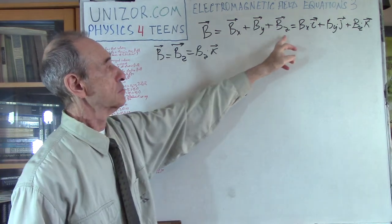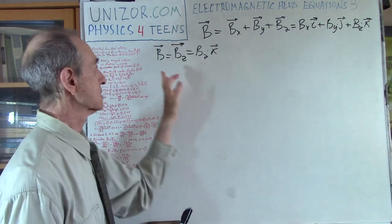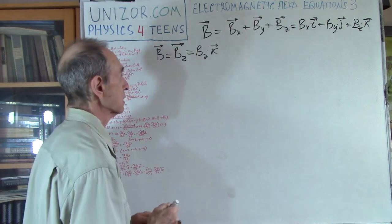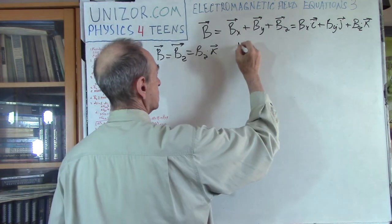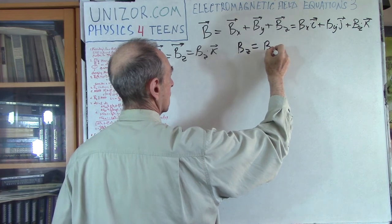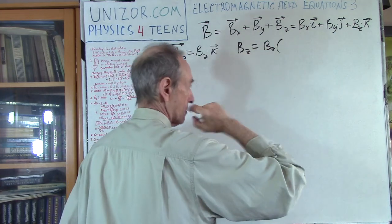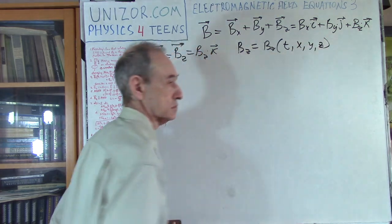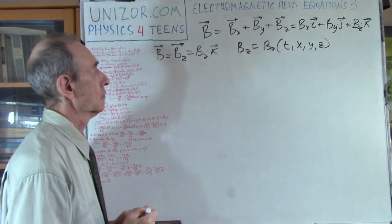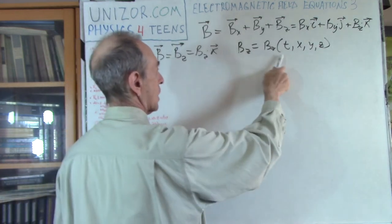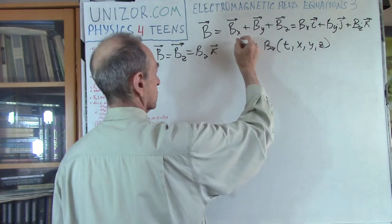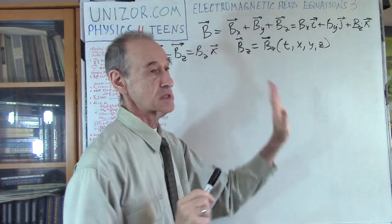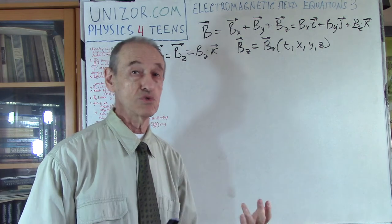So By and Bx are equal to zero — we are considering only this type of magnetic field. Obviously Bz is a function of time and location. We know the direction of this vector is along the Z axis.